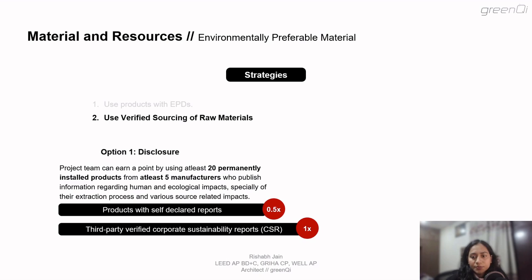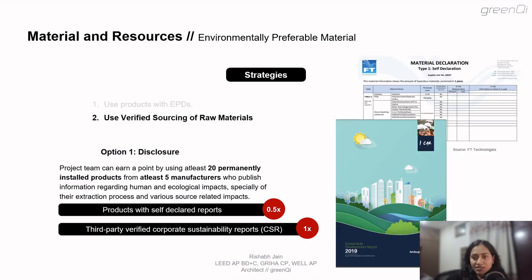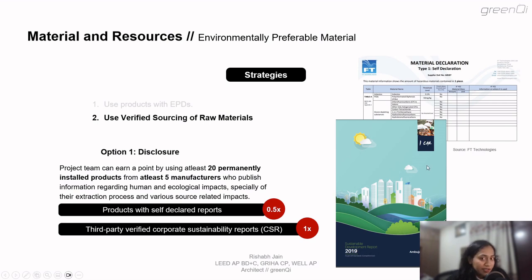So different types of products are valued at different levels. The first material declaration is basically a self-declared list where the raw material sources are listed. The second is a third-party verified CSR report.